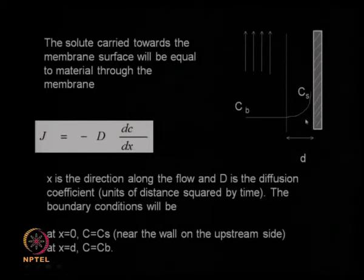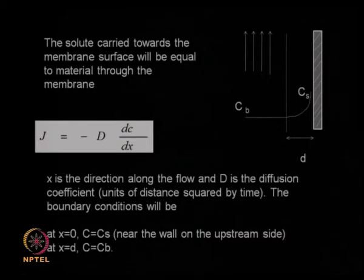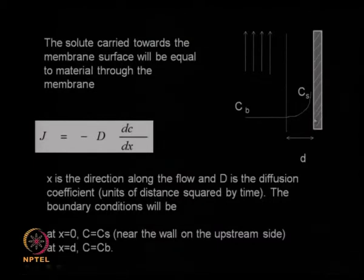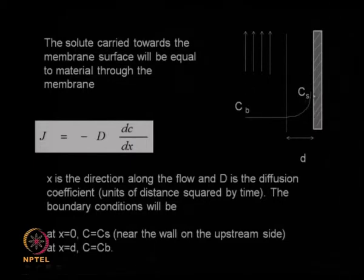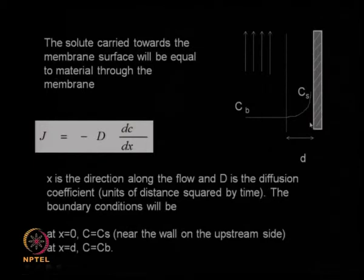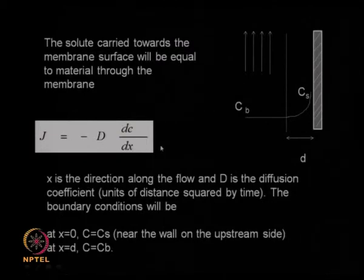The governing equation comes from Fick's law of diffusion. The flux — the amount of solute flowing per area per time — is given by the diffusion coefficient D and dC/dx. dC/dx represents the concentration gradient along the distance x, and D is the diffusion coefficient with units of centimeter squared per second (or foot squared, or millimeter squared per time). The boundary conditions are: at x = 0 (near the wall on the upstream side) concentration is C_s, and at x = δ (the boundary layer thickness), concentration is C_b.